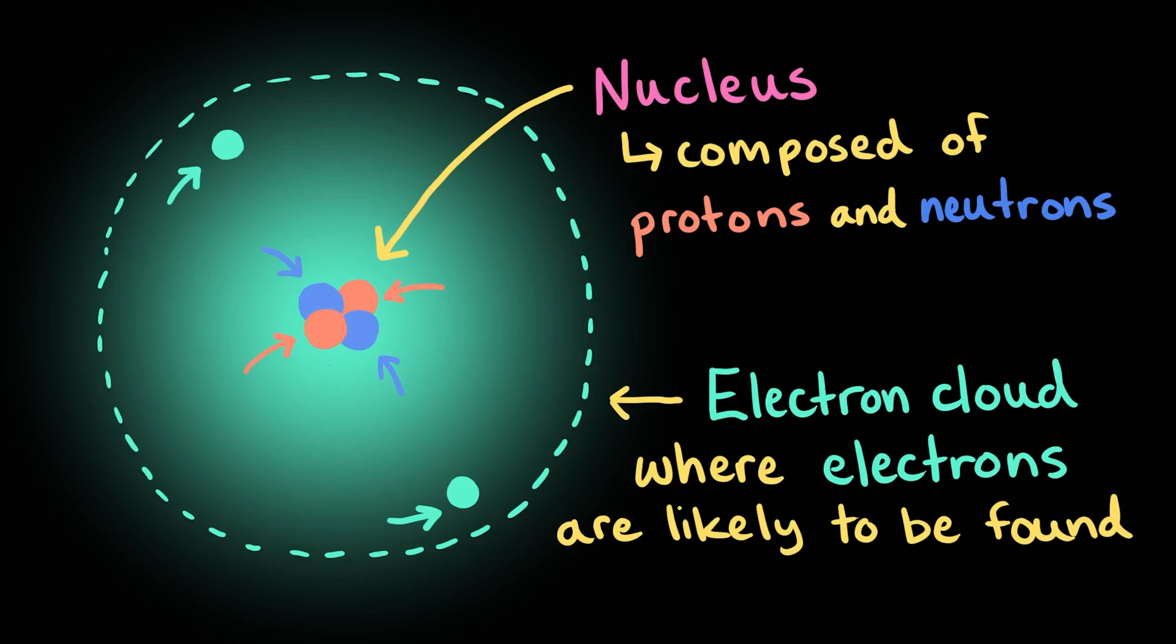I've drawn the nucleus much larger than it really is, but an atom's electron cloud can be 100,000 times larger than its nucleus. So the electron cloud actually makes up most of the atom's volume.